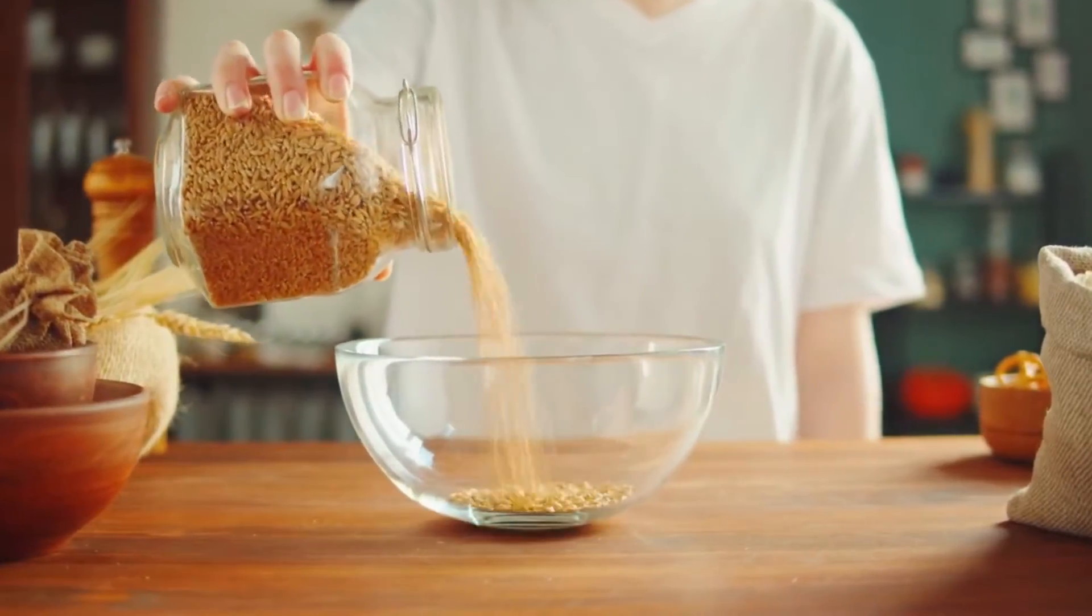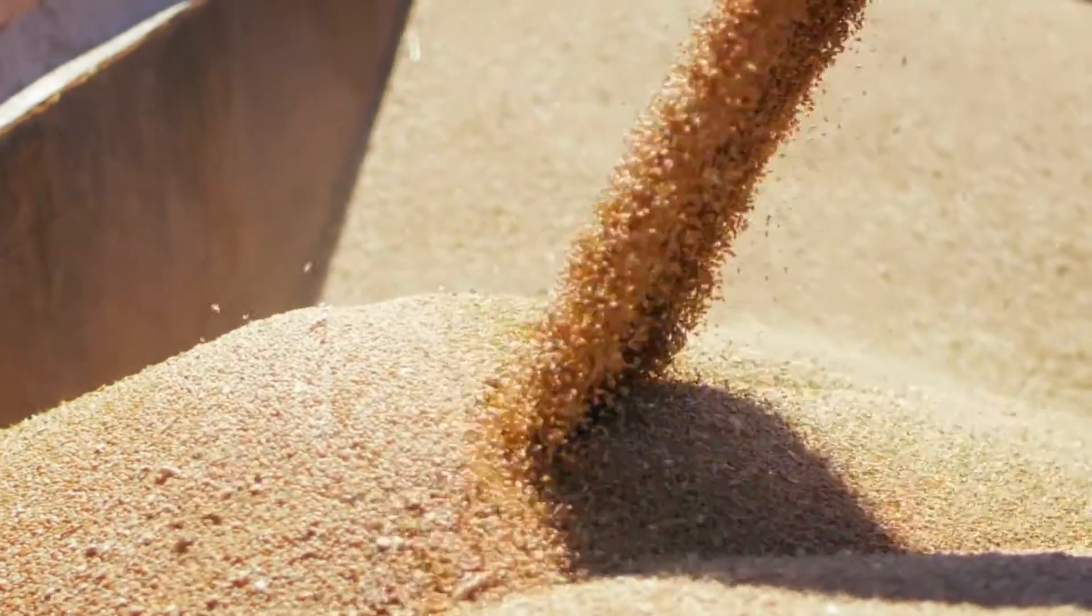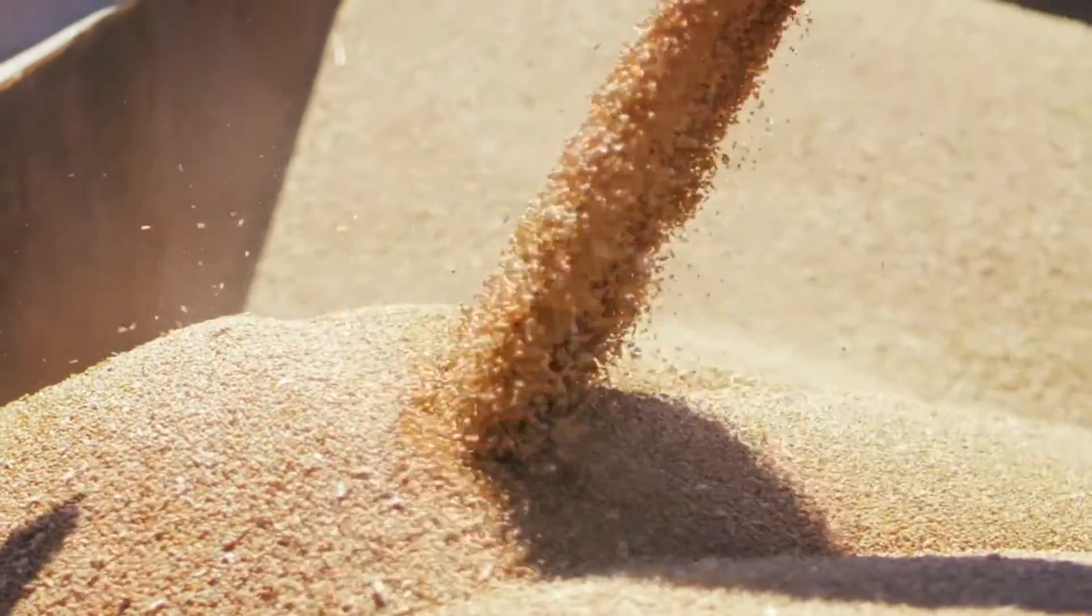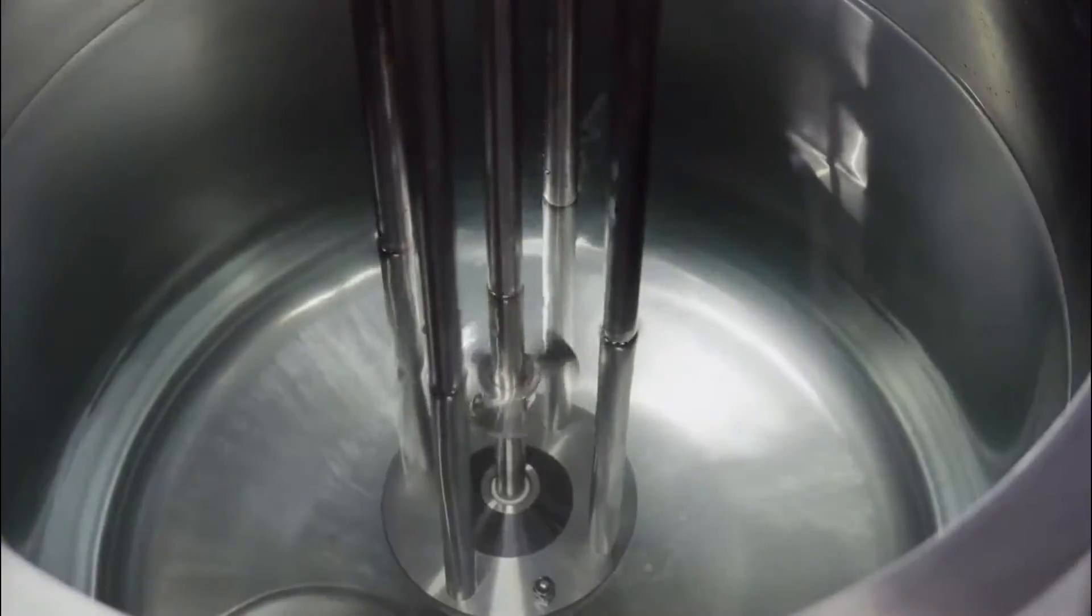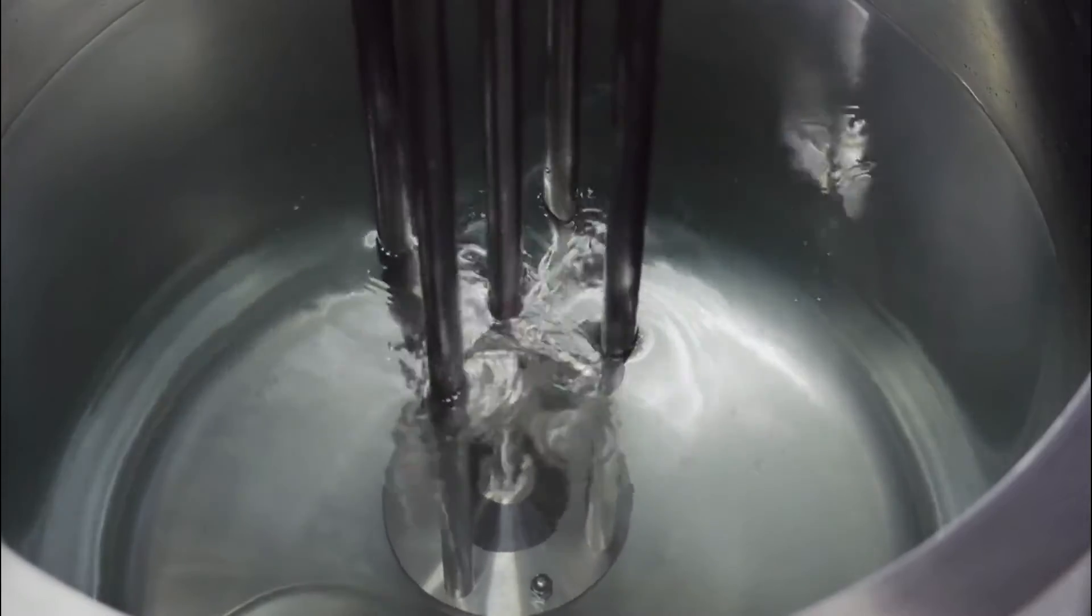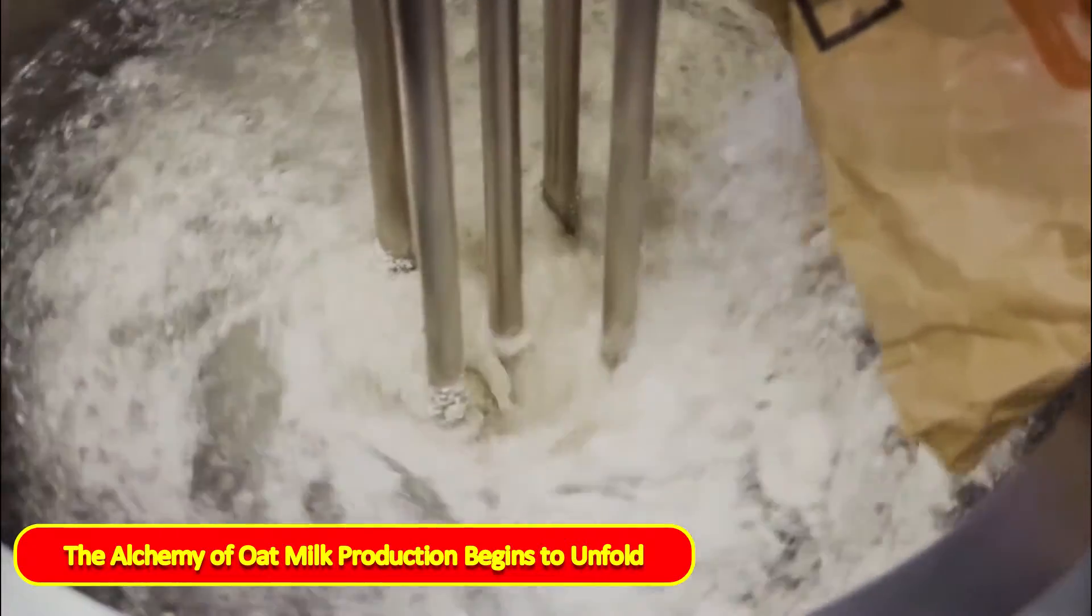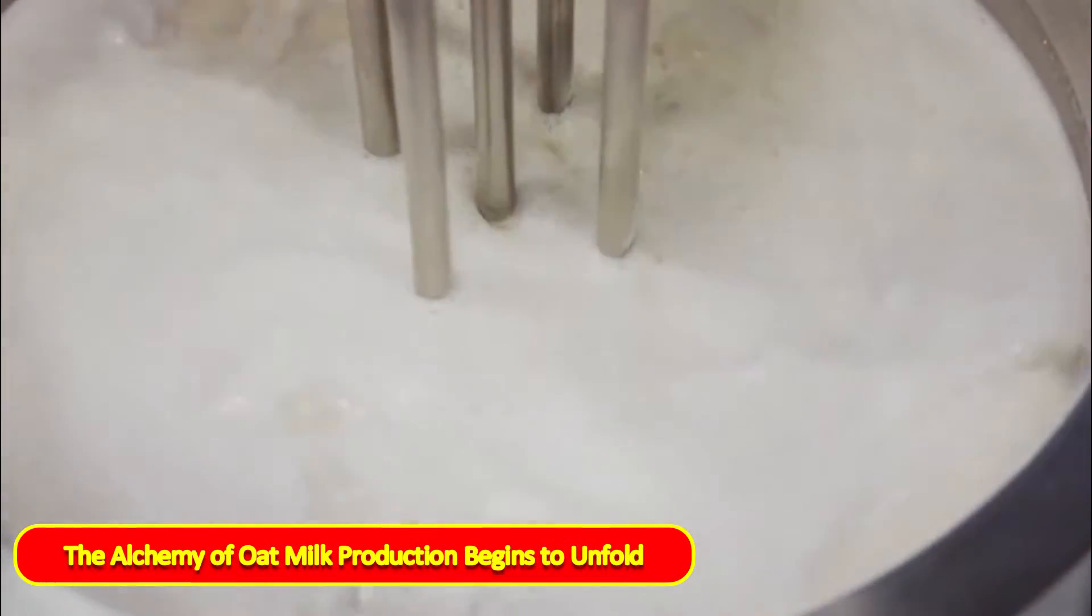Transported from field to facility, the oats embark on the next leg of their journey, arriving at cutting-edge oat milk factories brimming with ingenuity and precision. Here, amidst the rhythmic hum of machinery and the intoxicating aroma of freshly ground grains, the alchemy of oat milk production begins to unfold.